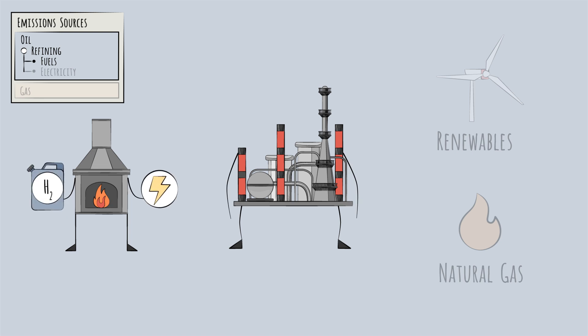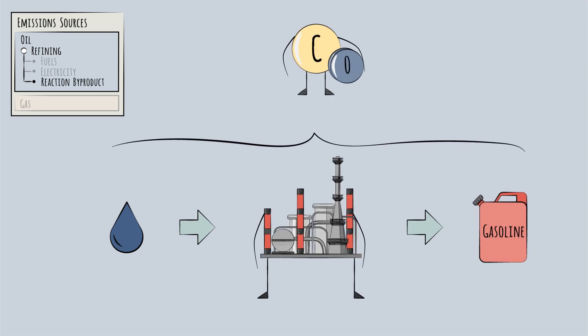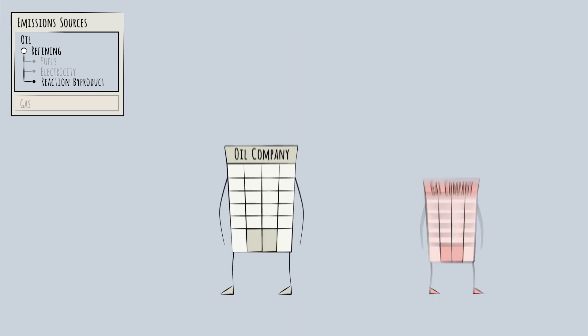But with current technologies they remain less effective or less economical. A third source of CO2 emissions in the refinery is the chemical reactions themselves—CO2 is often emitted as a byproduct.